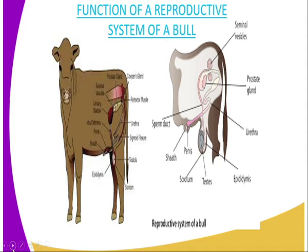Then we have the sheath, which is meant for protecting the glans penis. And we have the testis, which has two functions. The first one is to produce the male sex cell, that is the sperm, and also to produce the male hormone. Then we have the scrotum, which is a sac that normally encloses the testis. The scrotum is very important because it regulates the temperature of the sperm.